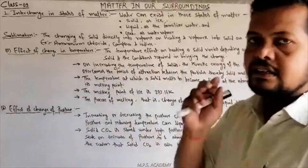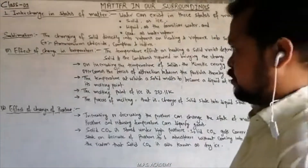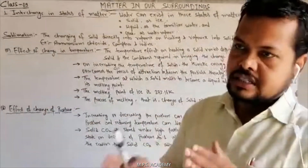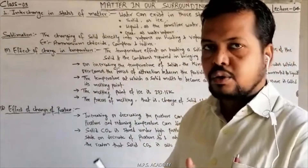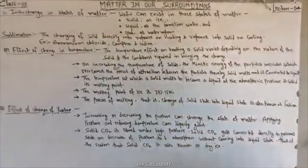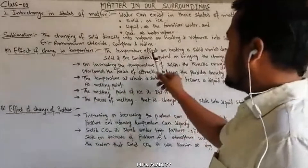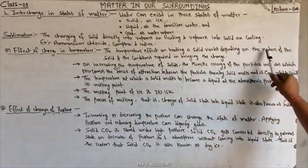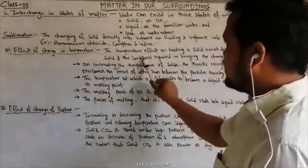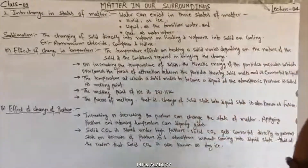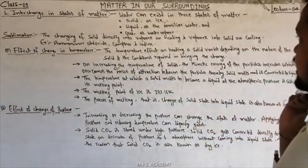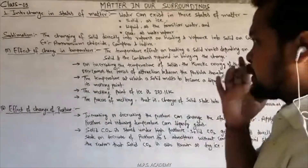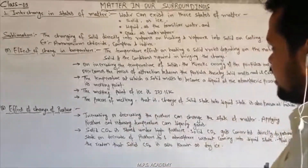Sublimation — solid directly gas में change होता है। ऐसा camphor और iodine के साथ होता है। अब हम बात करते हैं effect of change in temperature on state. The effect of temperature on heating a solid varies depending on the nature of the solid and the conditions required to bring about the change.